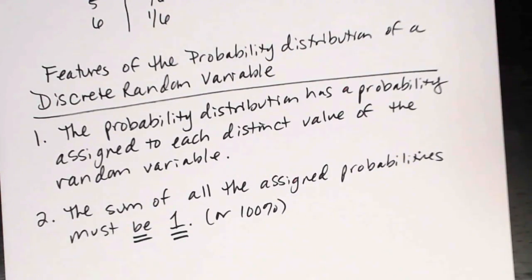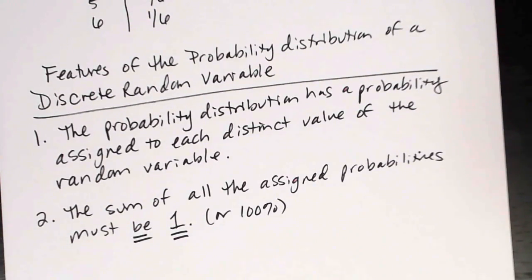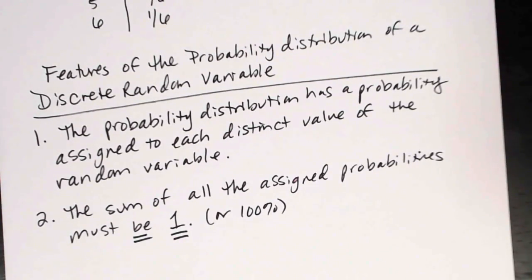The last concept in this section is the mean and standard deviation for a discrete probability distribution. The textbook covers the formulas for computing these by hand, but a separate calculator video will show how to compute the mean and standard deviation of a probability distribution using your calculator.